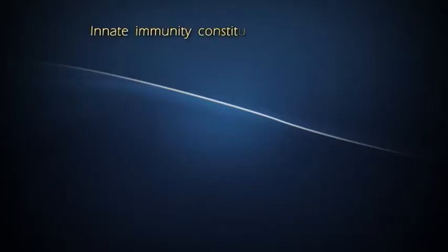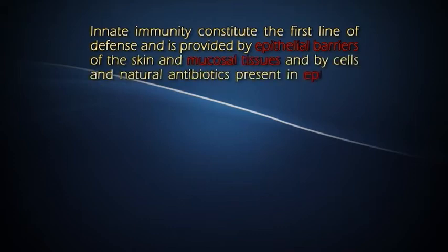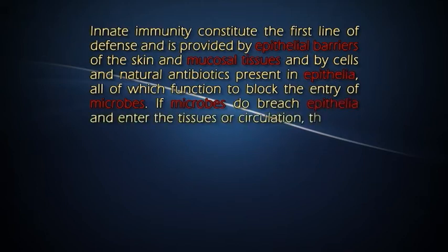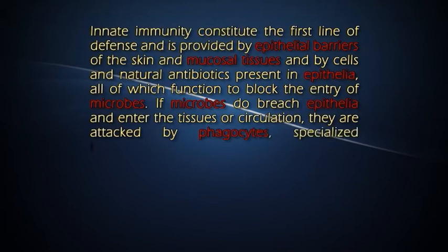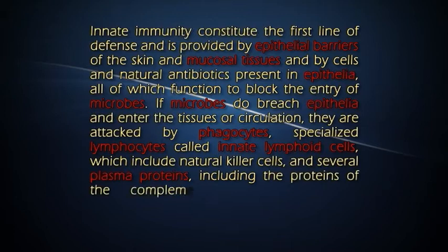Also, innate immunity is non-adaptive, meaning the nature or quality of the reaction to a foreign substance does not change when the organism encounters this substance repeatedly. Innate immunity constitutes the first line of defense and is provided by epithelial barriers of the skin and mucosal tissues, and by cells and natural antibiotics present in epithelia, all of which function to block the entry of microbes. If microbes do breach epithelia and enter the tissues or circulation, they are attacked by phagocytes, specialized lymphocytes called innate lymphoid cells, which include natural killer cells, and several plasma proteins including the proteins of the complement system.